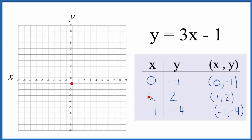We have x is 1 and y is 2, so we'll go up 2, and then we have x is negative 1, go over to the left, and y is negative 4, so go down 4, and there's our graph.